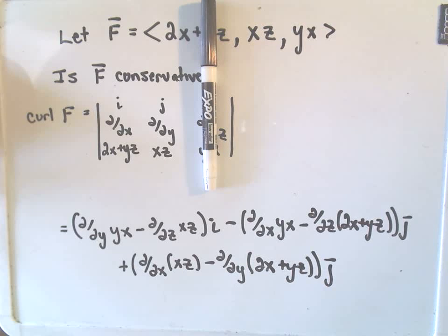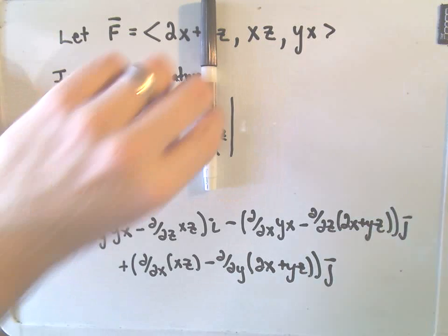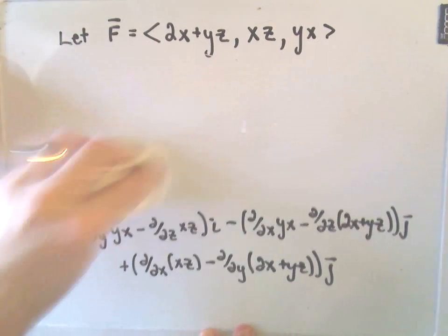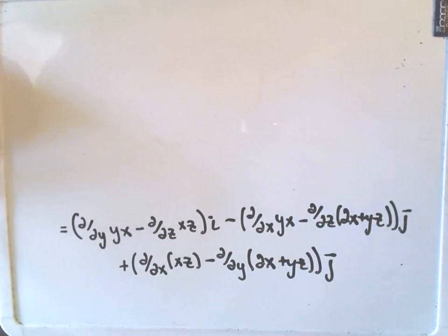So again, if all of this works out to be 0, then we do, in fact, have a conservative vector field. So, I think we can calculate this pretty quickly here.